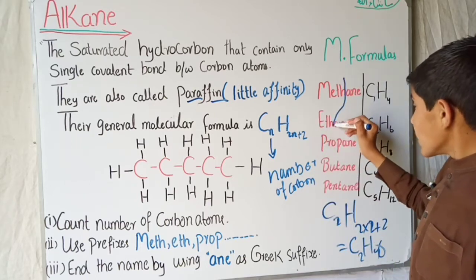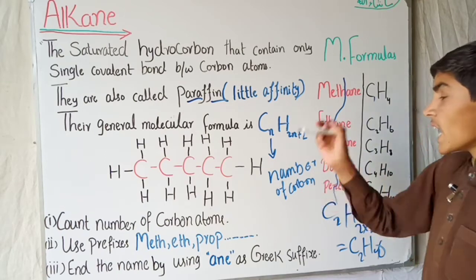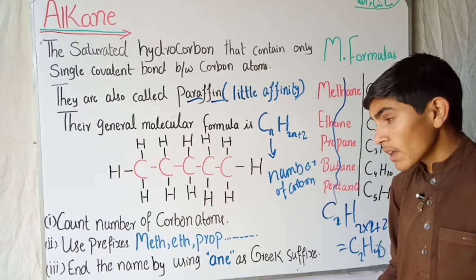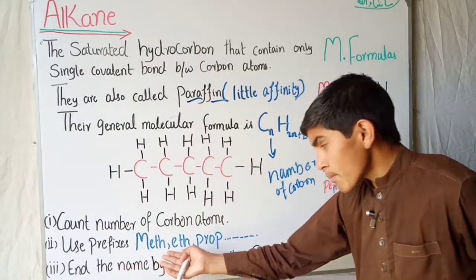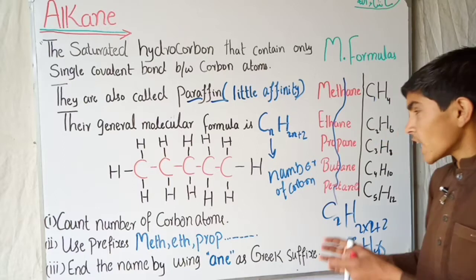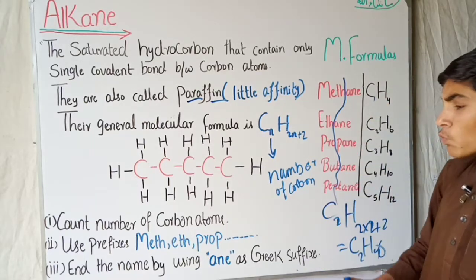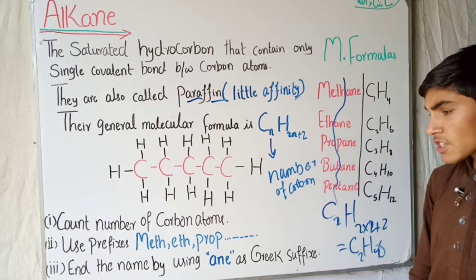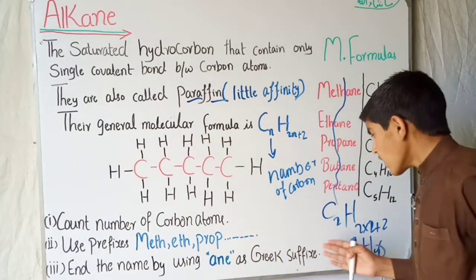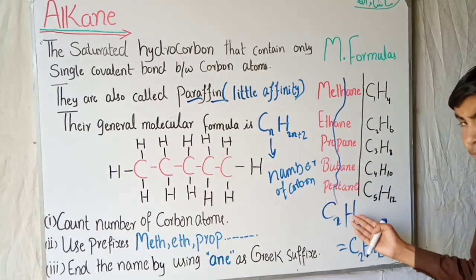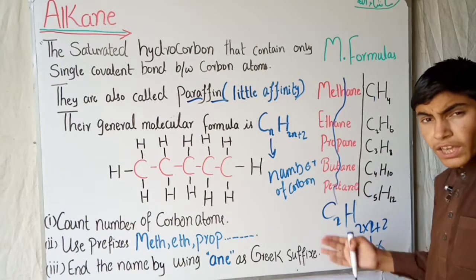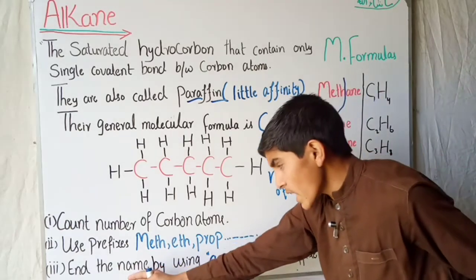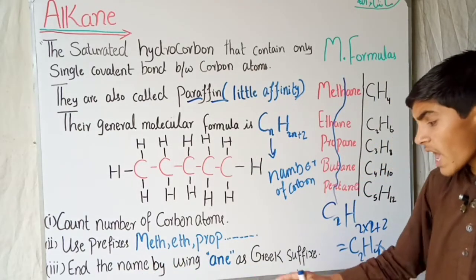The first part of the alkane name is given by counting the number of carbons and using the corresponding prefix. So the naming goes: methane, ethane, propane, and so on. Continuing further we have hexane, heptane, octane, nonane, decane, and so on.